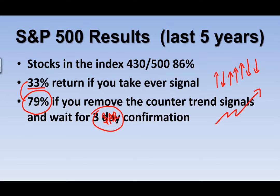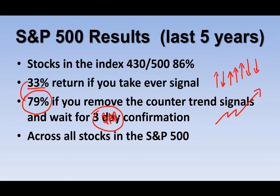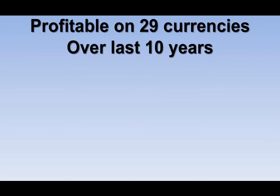That's for the S&P 500 on 430 out of 500 stocks — not too shabby. It has also been profitable on 29 currencies over the last 10 years, so if you trade any forex or currency futures, it's worked on 29 different pairs over 10 years. That's a good track record.